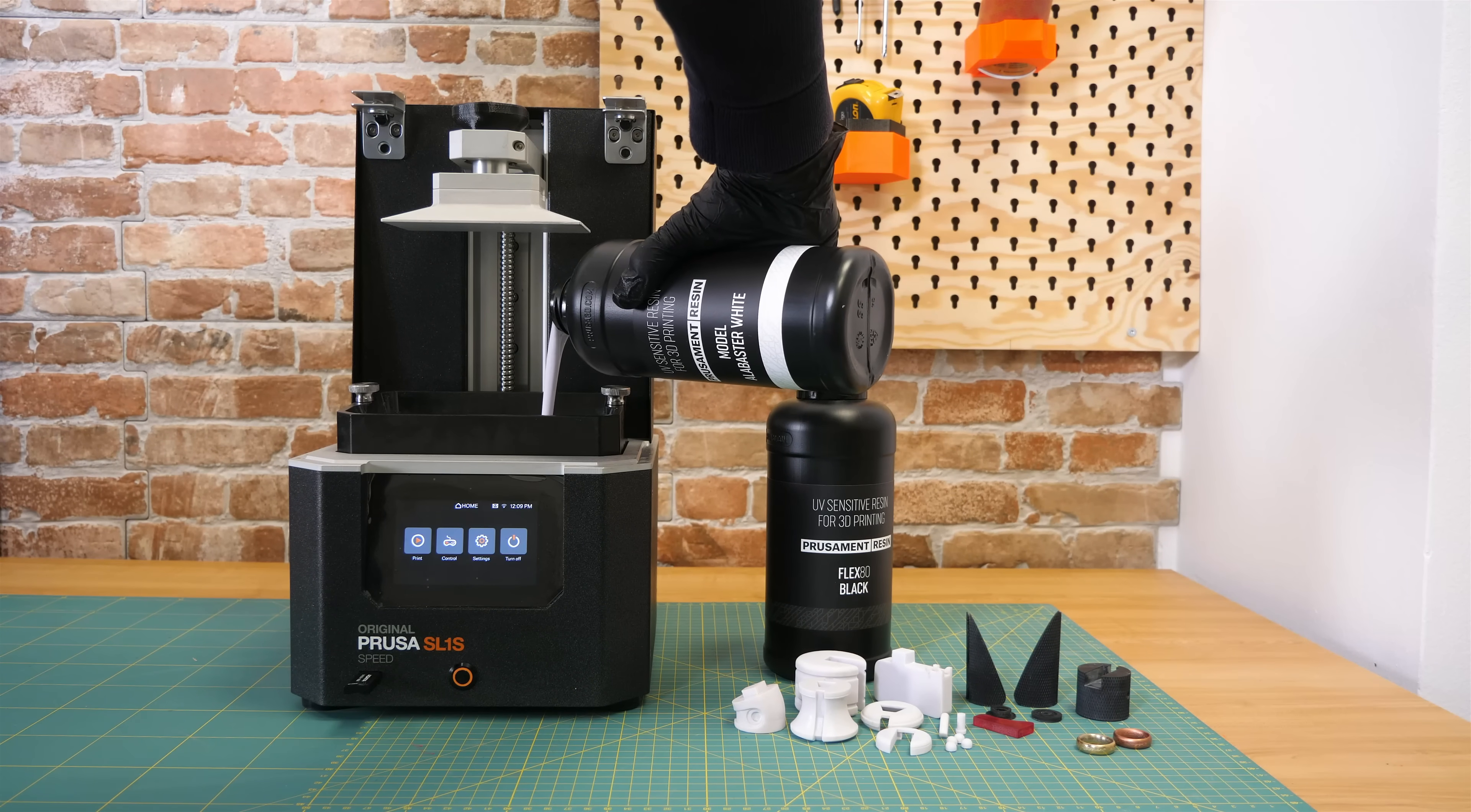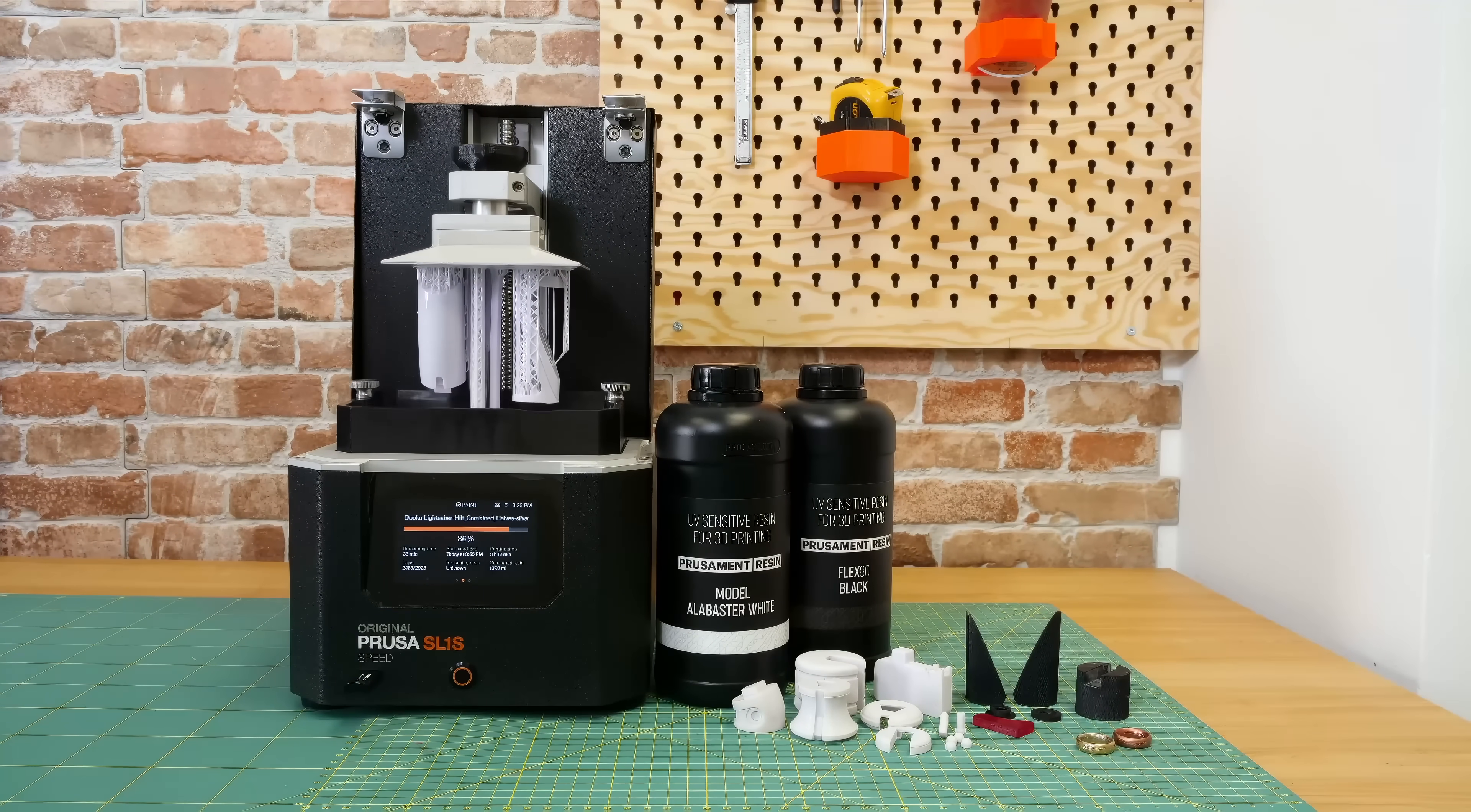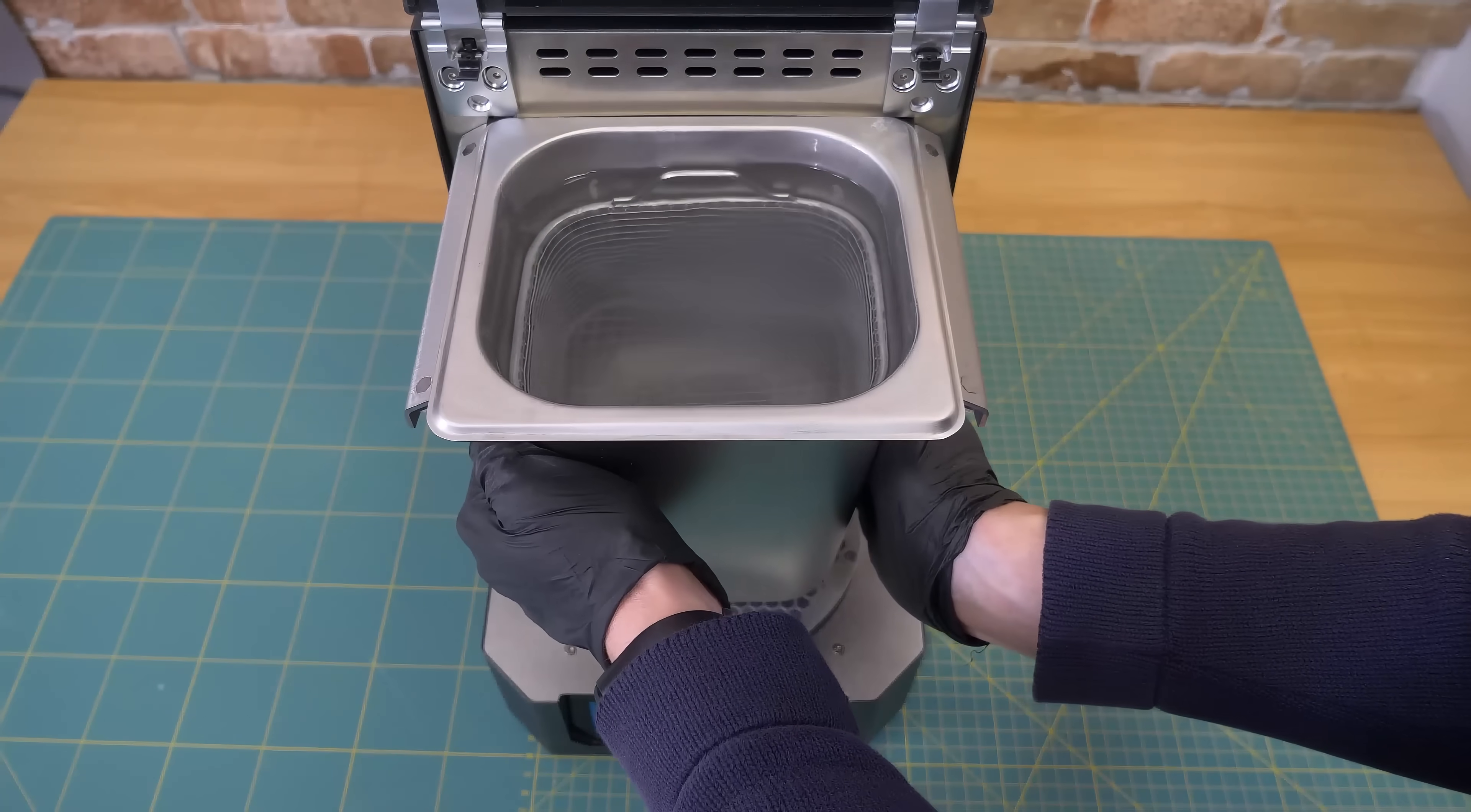We chose our SL1S Speed 3D printer for producing the parts that would be later covered in a thin layer of metal. Resin prints are heavy, they are beautifully smooth, and their solid body prevents the electrolyte from seeping into the model.